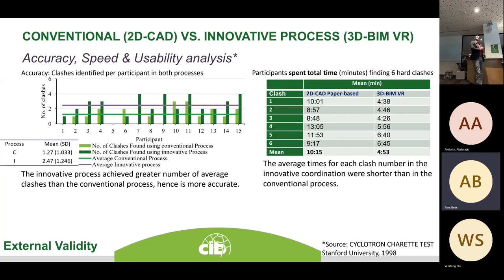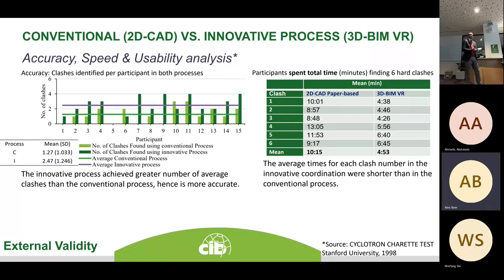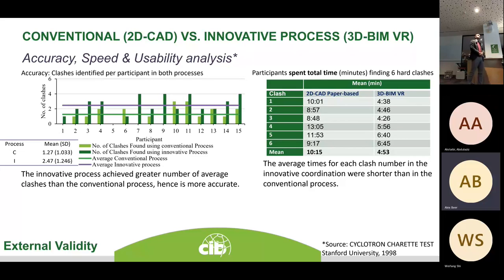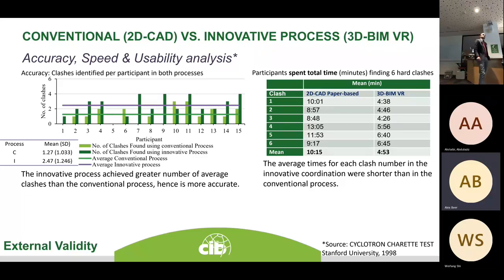Jumping to our three hypotheses, designed following the shared test method from Stanford University, the study compared conventional to innovative methods to evaluate the effectiveness of computing systems versus paper-based systems. We tested three factors: accuracy, speed, and usability. For accuracy, we purposely designed six clashes in the experimental study and had the 15 participants attempt to find them under both conditions.